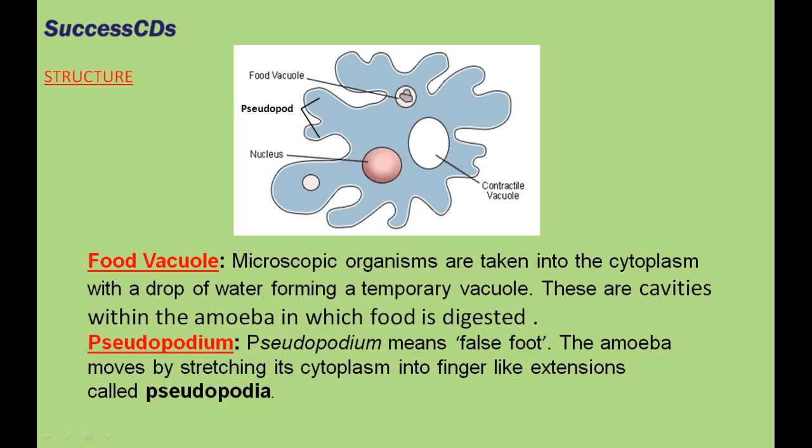Microscopic organisms are taken into the cytoplasm with a drop of water, forming a temporary vacuole. These vacuoles are called food vacuoles, which are cavities within the amoeba in which food is digested. The amoeba has false feet, also called pseudopodia. The amoeba moves by stretching its cytoplasm into finger-like extensions called pseudopodia.